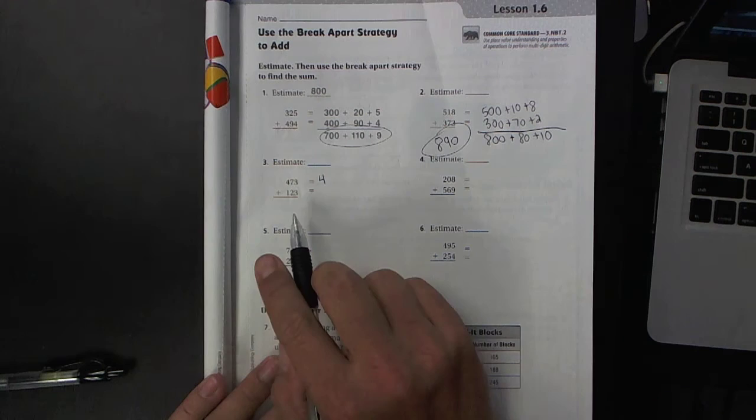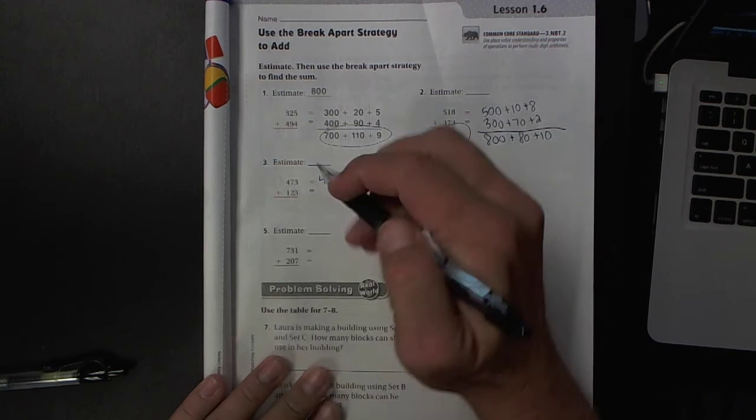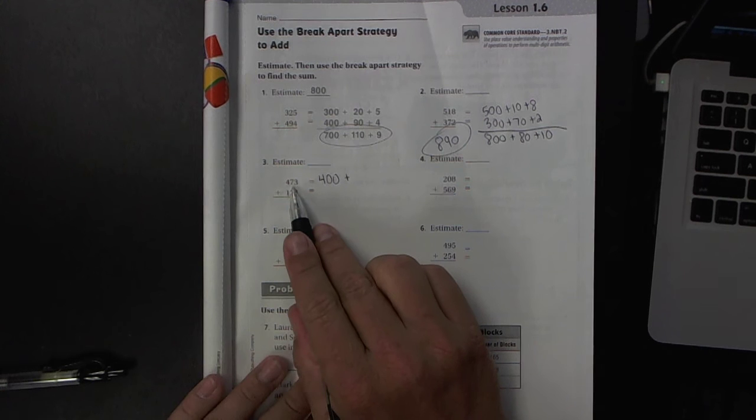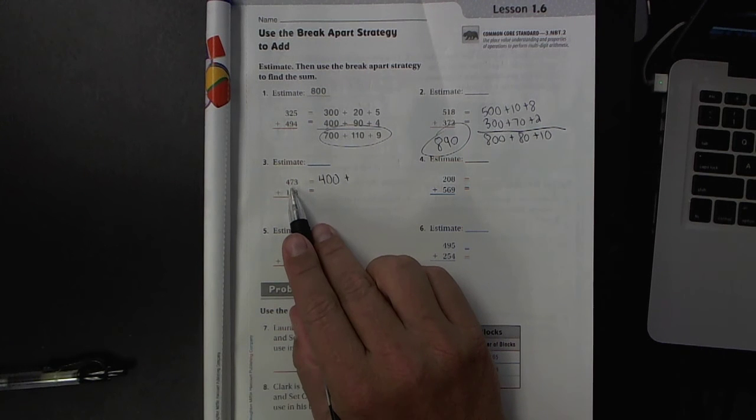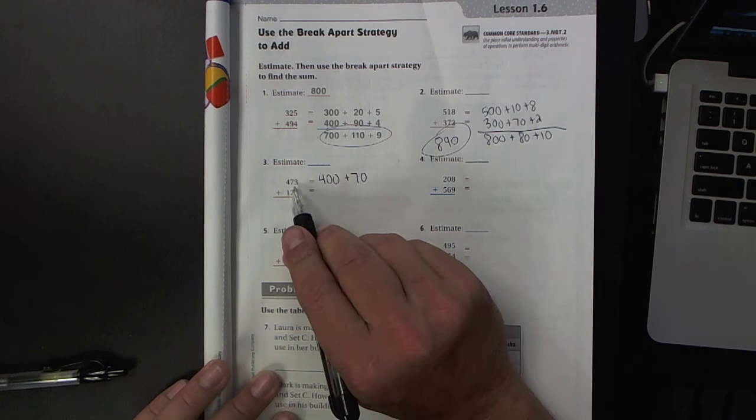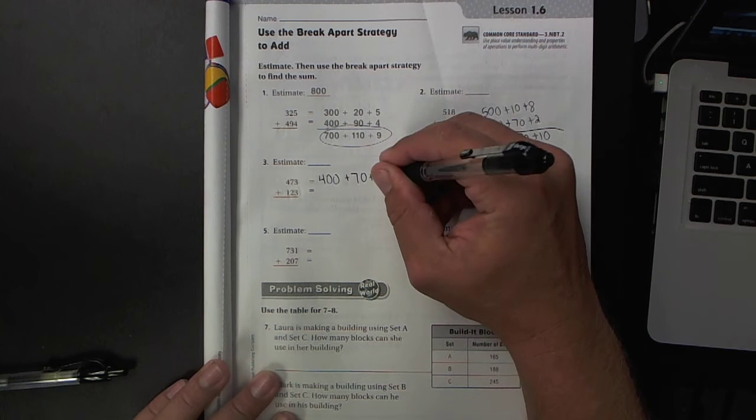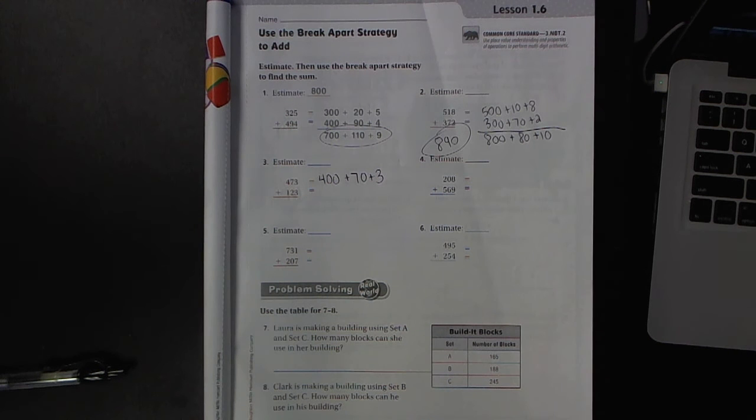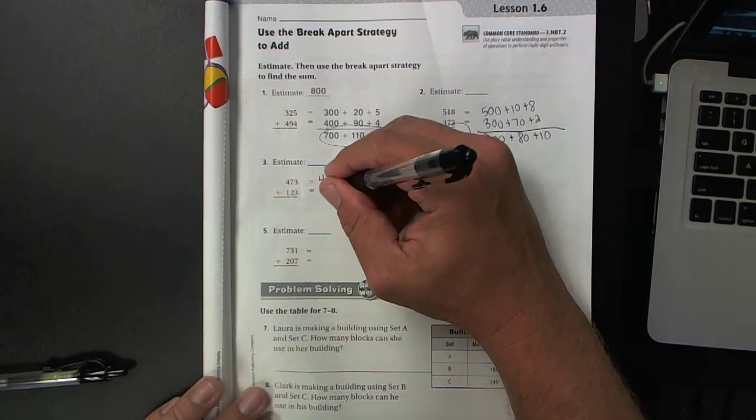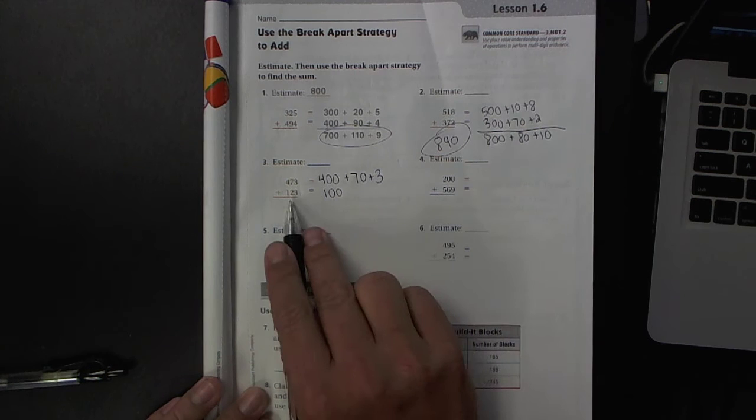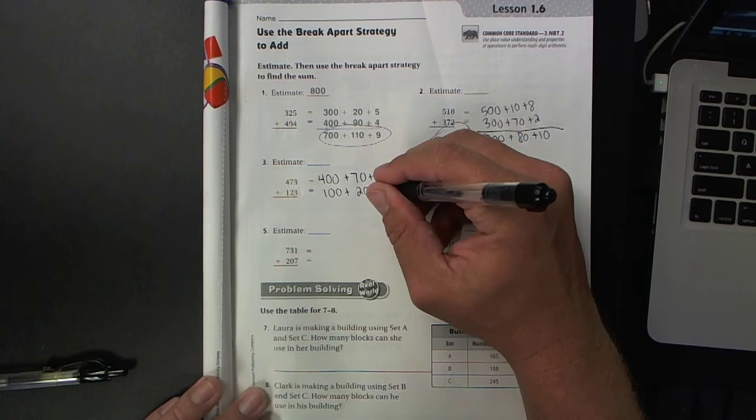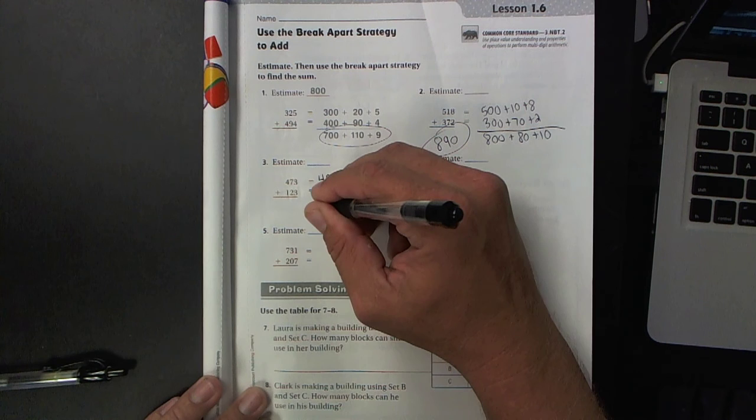So the 4 is in the hundreds place, so it's worth 400. The 7 is in the tens place, so it's worth 70. And the 3 is in the ones place, so it's worth 3. The 1 is in the hundreds place. The 2 is in the tens place. And the 3 is in the ones place, so that's worth 3.